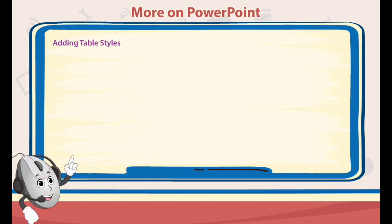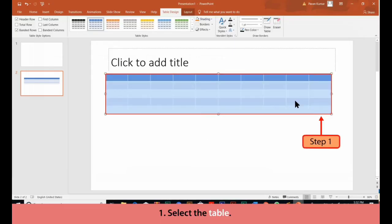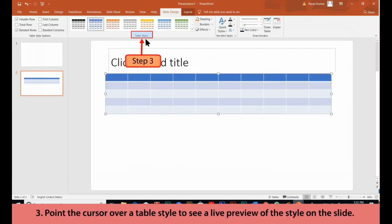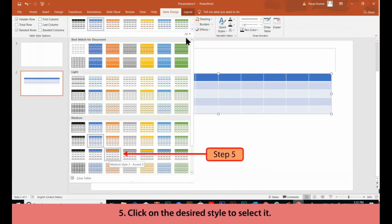Adding Table Styles. Follow these steps to apply table styles to the table. 1. Select the table. 2. Click on the Design tab. 3. Point the cursor over a table style and see a live preview of the style on the slide. 4. Click on the drop-down arrow to view all the options. 5. Click on the desired style to select it.